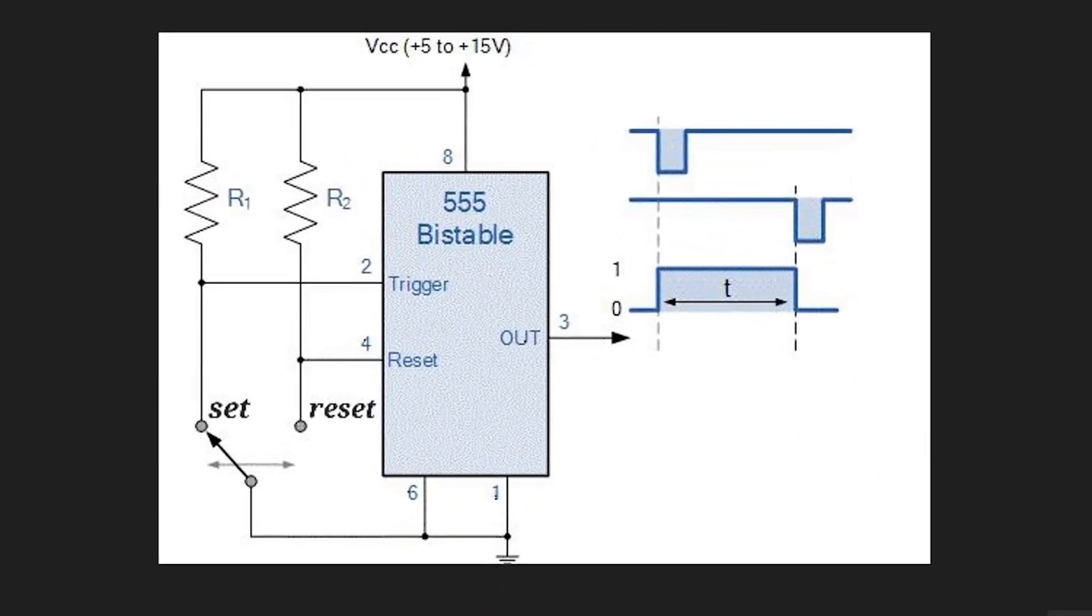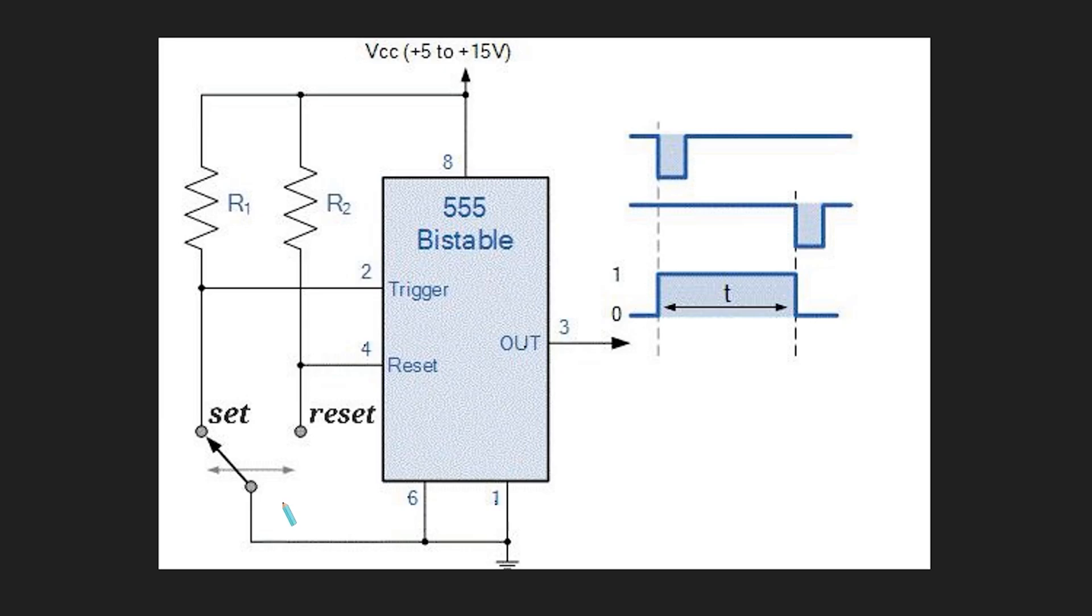The last circuit is the bistable circuit. It's a very simple one, there's no capacitor involved, and no formulas to calculate. All you need to do is adjust the inputs of the comparators so that the output gives you exactly what you want.